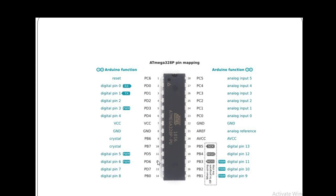If you use the microcontroller alone, not in the Arduino UNO, you must connect a crystal oscillator to pins 9 and 10 or it will not work. Pins 11 through 19 are used for digital I/O. In total there are 14 digital input/output pins, from digital pin 0 to digital pin 13. Of these 14 digital pins, six are used for PWM output: digital pins 3, 5, 6, 9, 10, and 11.